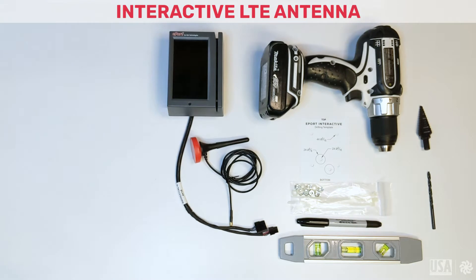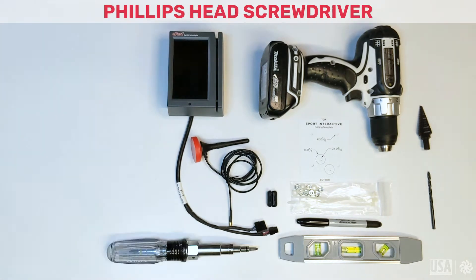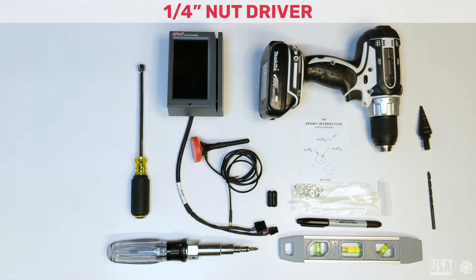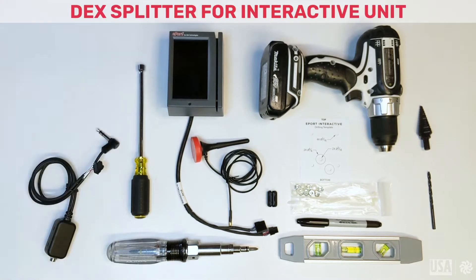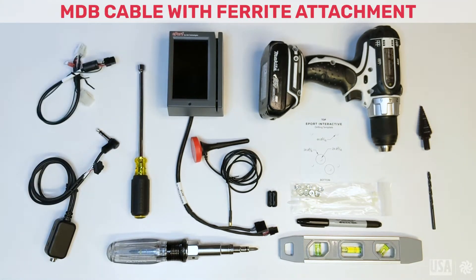You'll also need the interactive LTE antenna and RF blocker clip, a Phillips head screwdriver, a 1 quarter inch nut driver, the DEX splitter for the interactive unit, and the MDB cable with the ferrite attachment for the interactive unit.